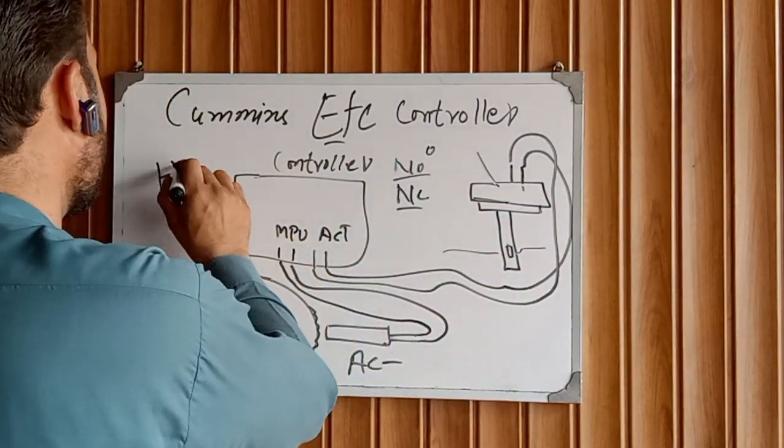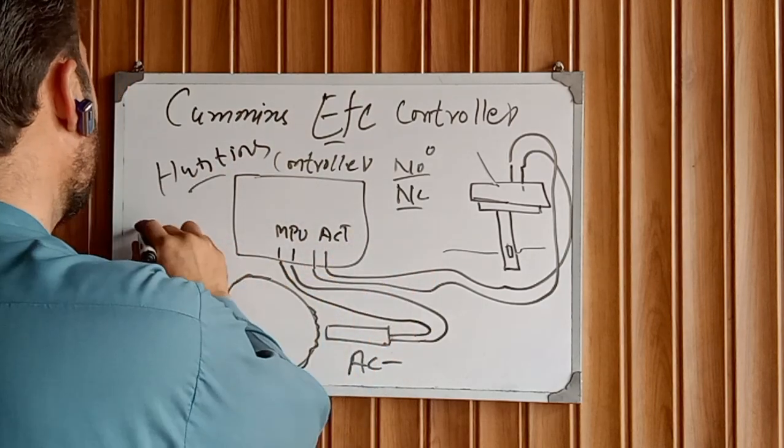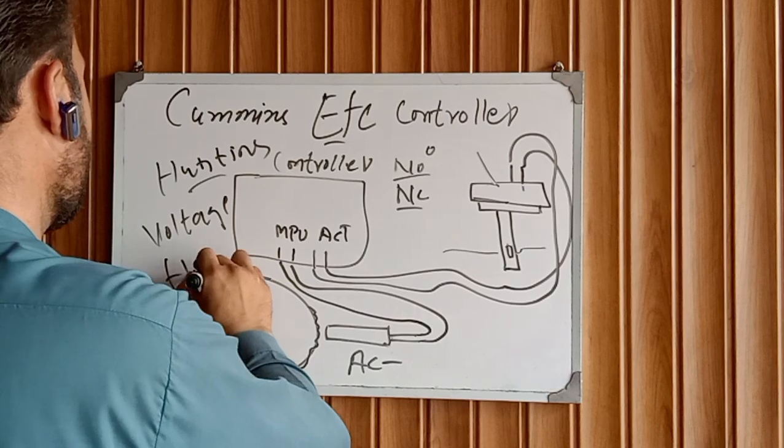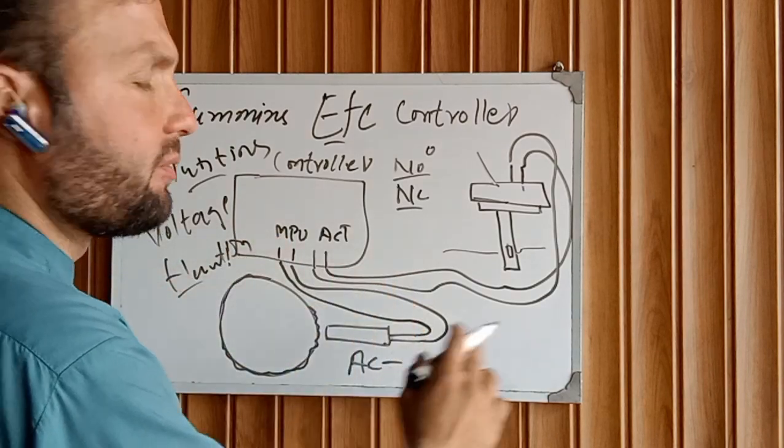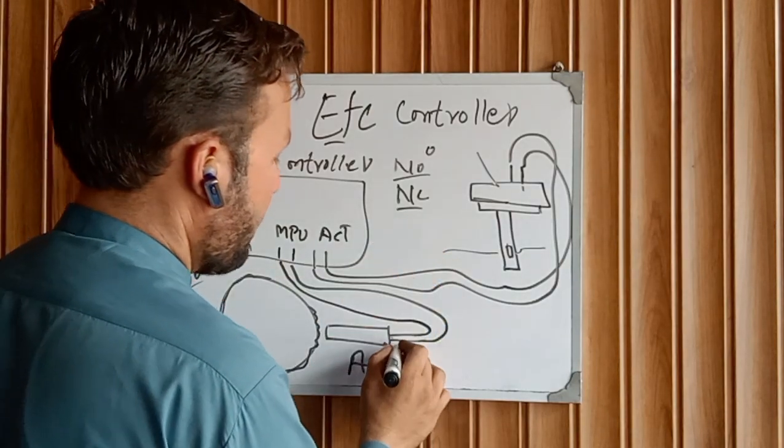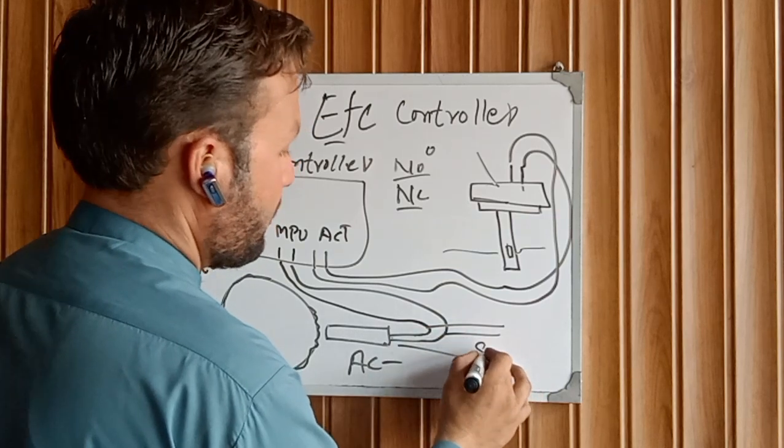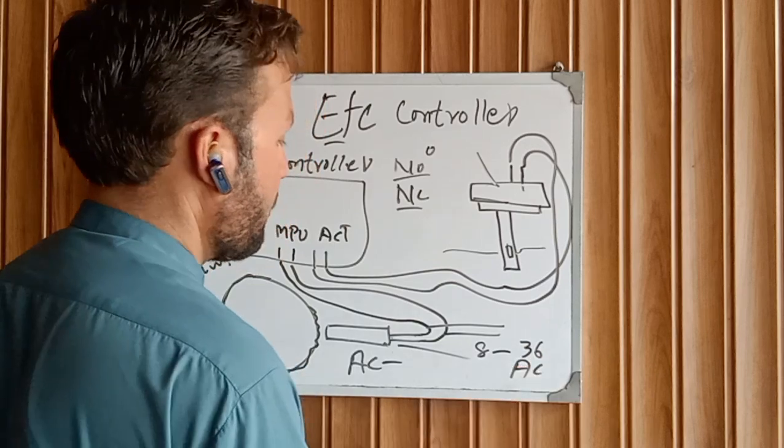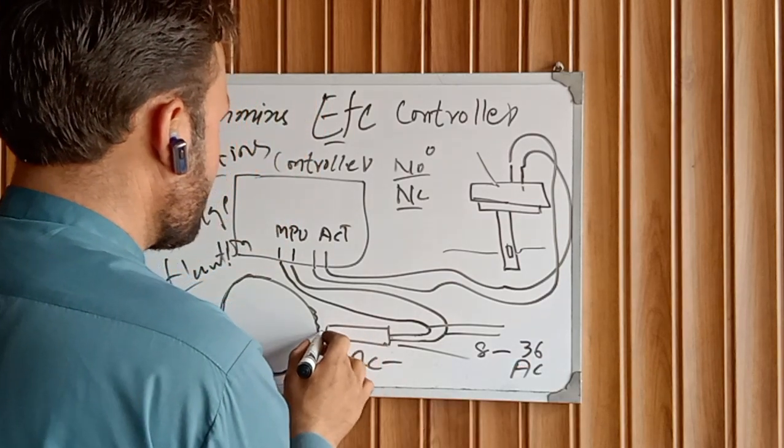If the generator is hunting, or there's voltage fluctuation, or poor rough running, this also means you need to check the MPU sensor output. Take a multimeter and take the reading from 8 volt to 36 volt AC. Make sure to check the MPU sensor here as it has a magnetic tip. You can check here.